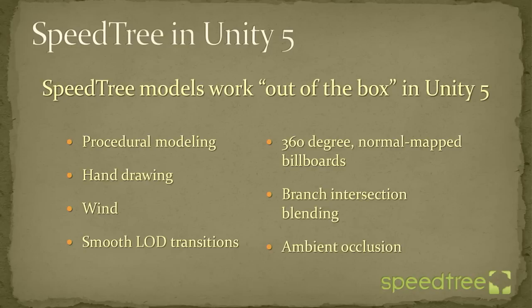Another thing we have is ambient occlusion. Trees make pretty good ambient occluders of themselves, so we make a pass on the tree so it ambient occludes itself — the middle of the tree gets darker, but it's not that simple, because a tree that only has leaves on the edge will only have those parts darkened. It stores those values per vertex and they get applied inside Unity as well.